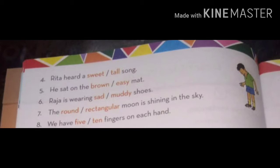Raja is wearing sad or muddy shoes. Here it will be muddy shoes. Raja is wearing muddy shoes. See next question. The round or rectangular moon is shining in the sky. It will be round here. As we all know the moon is not rectangular. It is round in shape. So circle round.